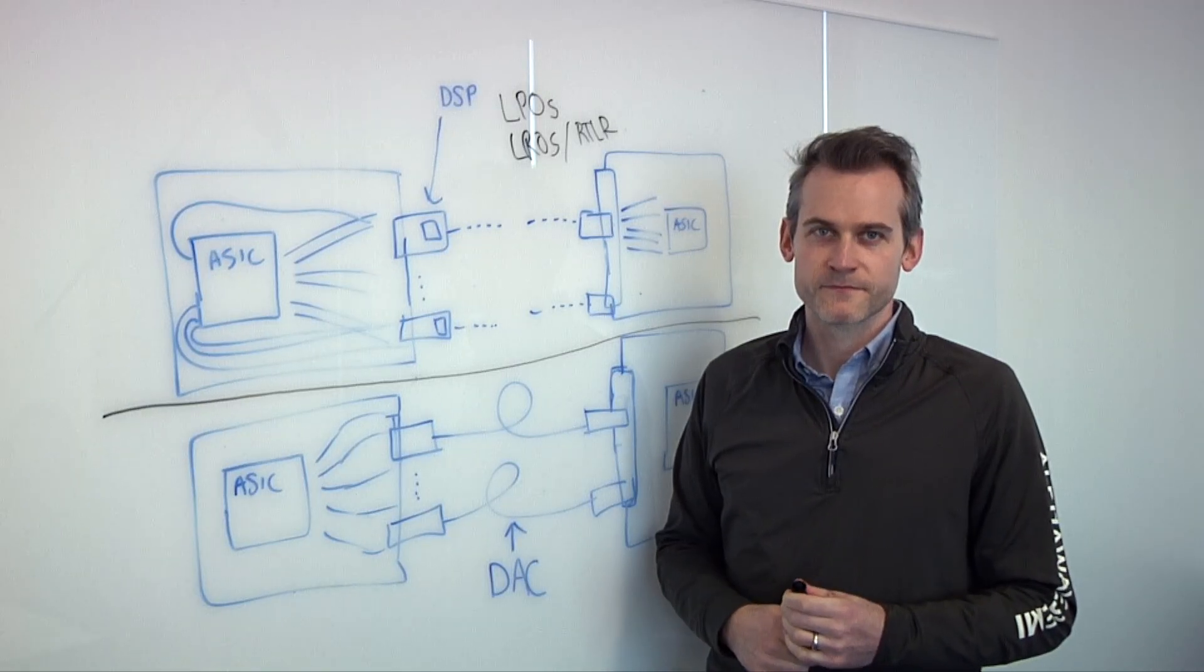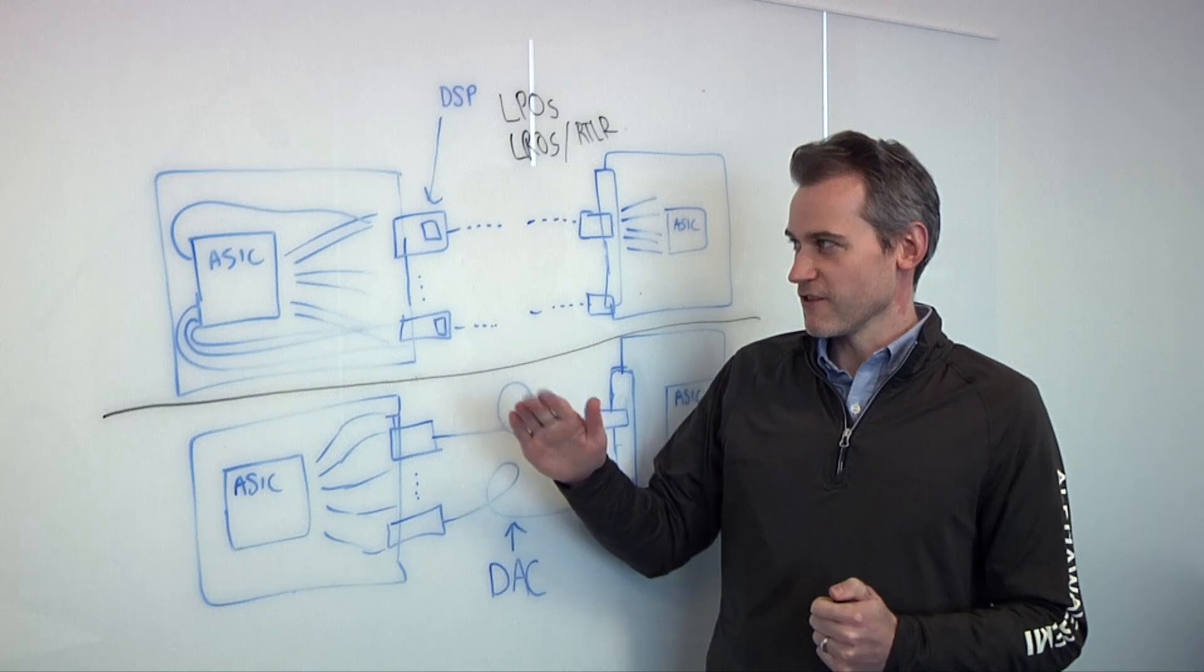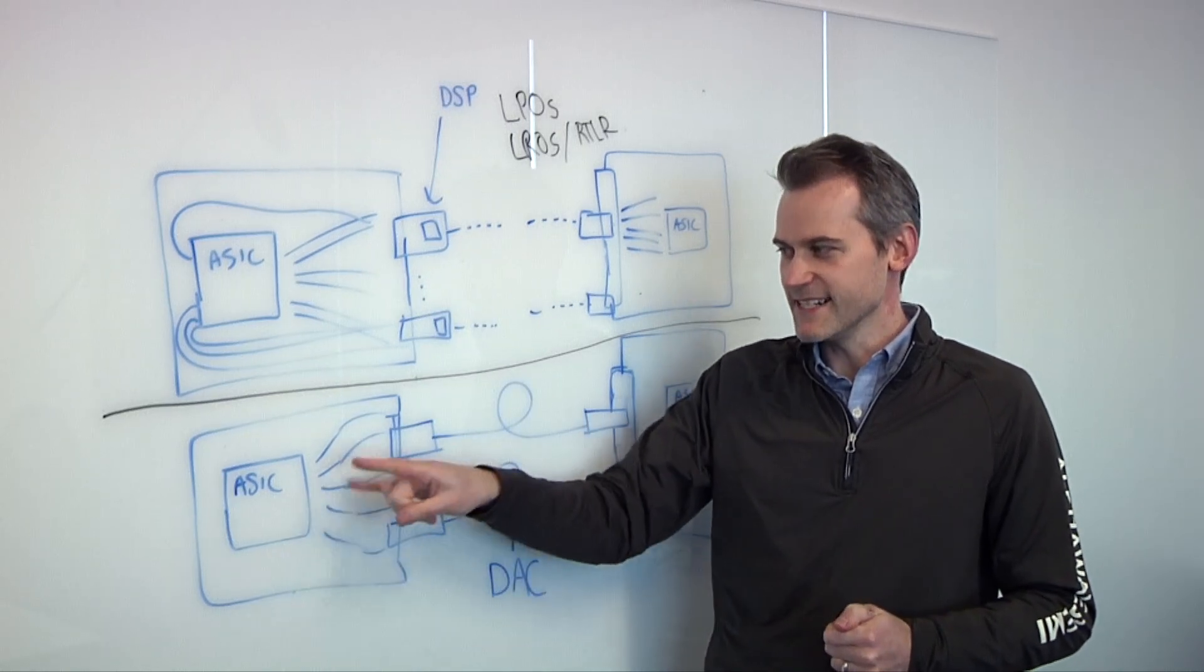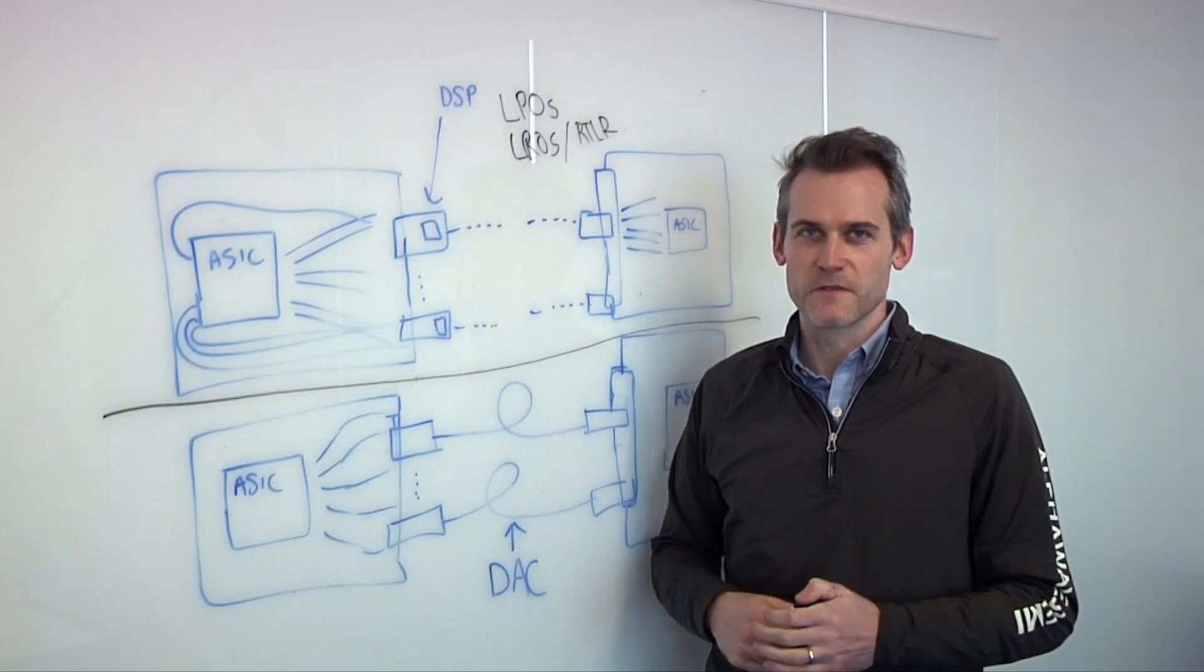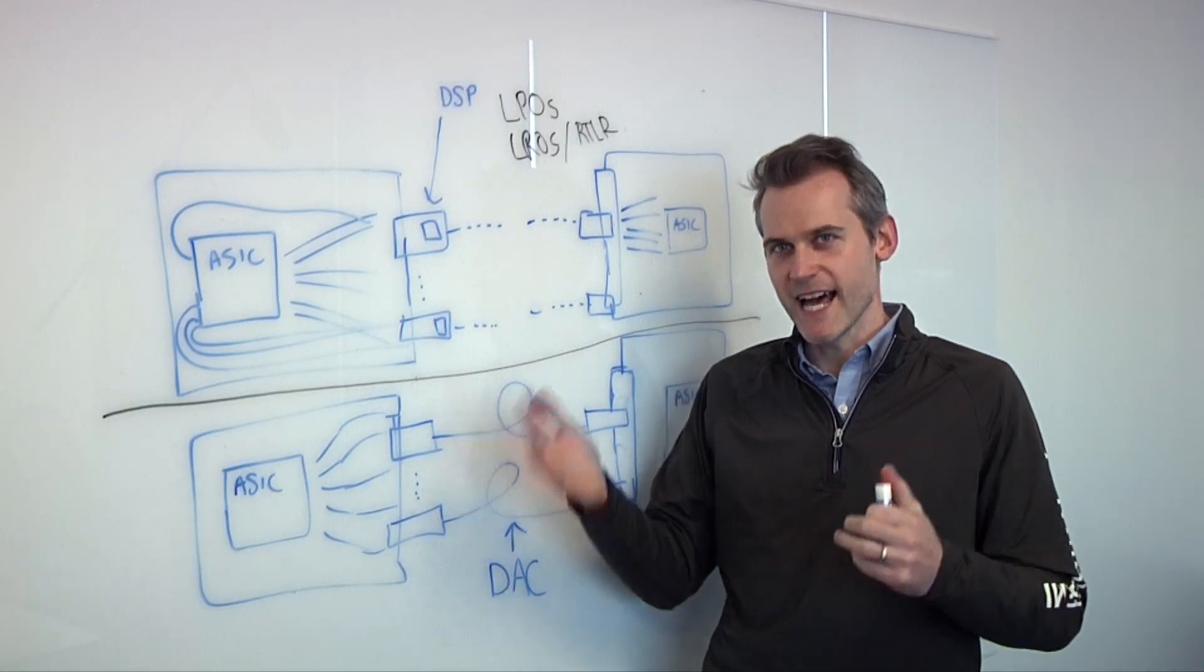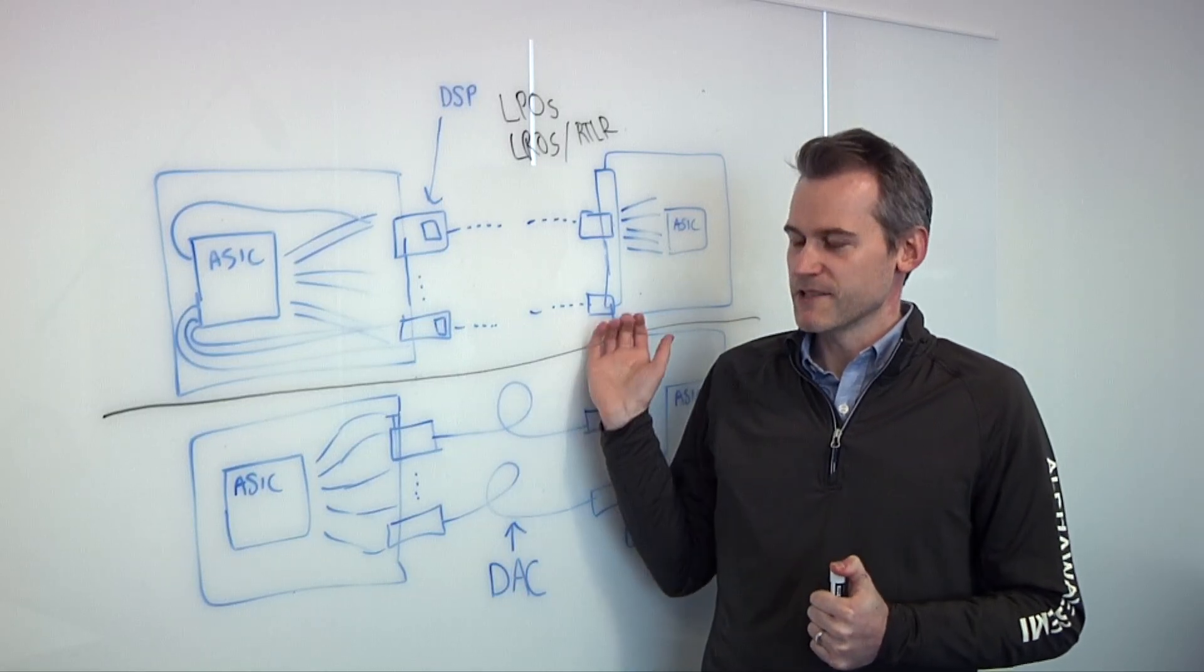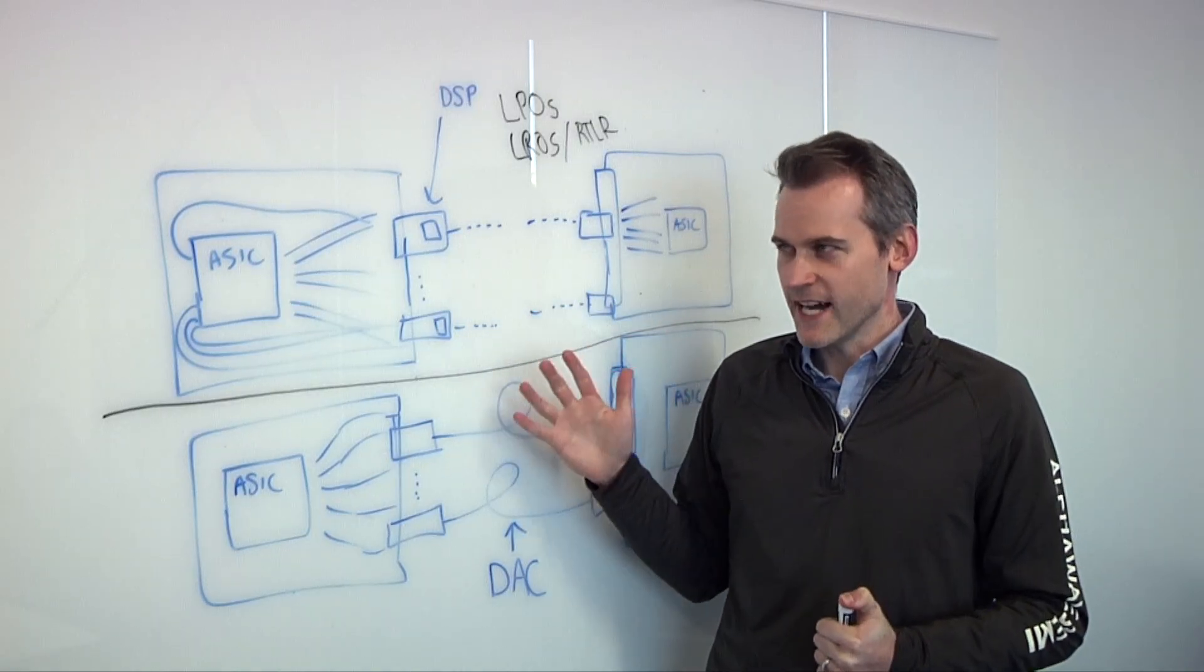So this is the best path forward to terabits per second, right? Yes. For any sort of interconnectivity reach perspective that's not die-to-die or anything, if you need the reach, you're likely going to need to use some sort of optics, whether it's fully retimed, half retimed, or unretimed, that kind of remains to be seen. That's really dependent on your SERDES. And that's where AlphaWave's expertise shines.